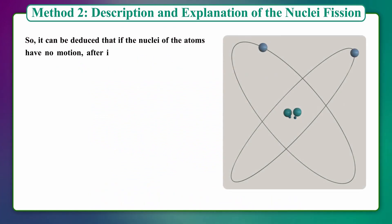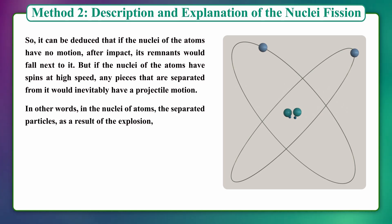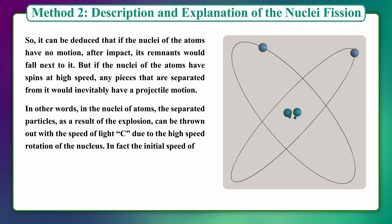It can be deduced that if the nuclei of atoms have no motion, after impact its remnants would fall next to it. But if the nuclei of atoms have spins at high speed, any pieces that are separated will inevitably have projectile motion.